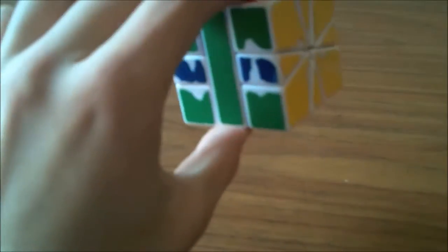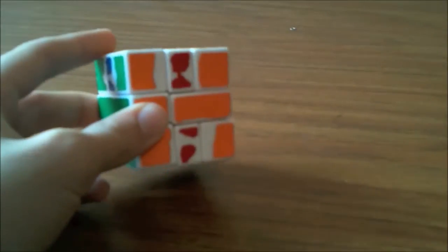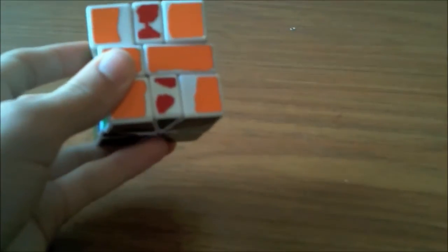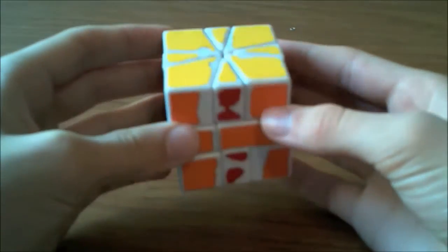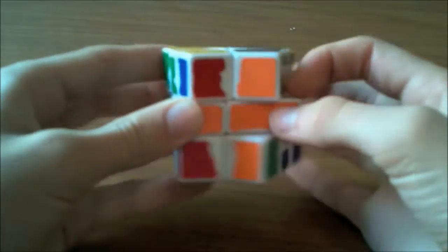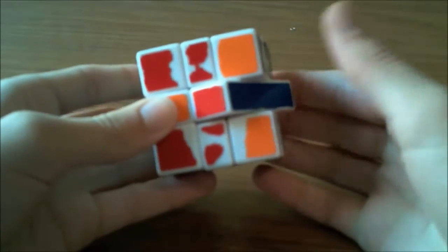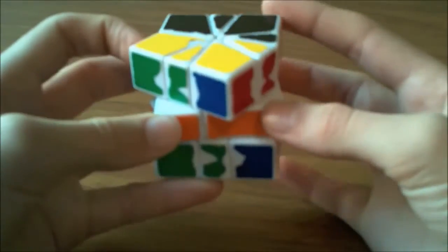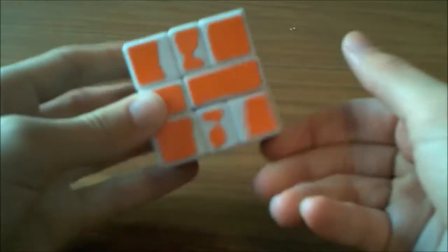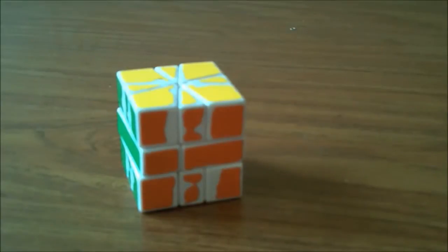You can also use this for two H-perms, and I actually do this one. When I have two H-perms, I do two CP algorithms. So for this you do the double N-perm, which is like that, algorithms in the description, and then you offset both layers by 1, and then you do it again, and it solves. It's a really fast way of doing two H-perms. It's a lot better than doing two look.